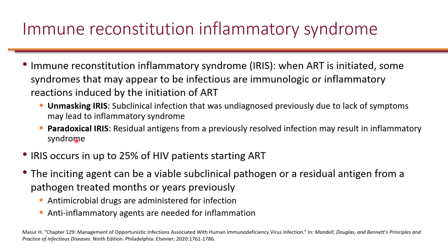The other type is paradoxical IRIS. This occurs in someone who had an infection that is no longer necessarily present, but residual antigens from that previously resolved infection may be circulating in the body. Once ART is started and CD4 counts go up, the body mounts a response to those antigens. These are important to keep in mind: when treating opportunistic infections, if ART is started simultaneously, it may initially look like the patient is getting worse, but that is typically just IRIS.